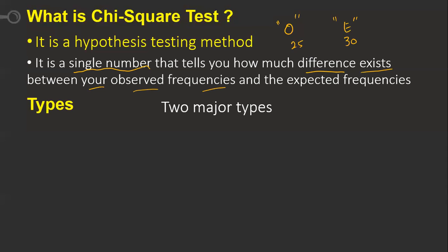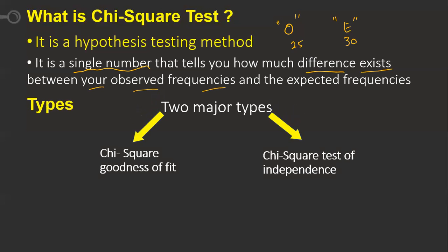There are two major types. The first is the chi-square goodness of fit, and the second is the chi-square test of independence. Both involve calculating a chi-square value, but they differ in their application.